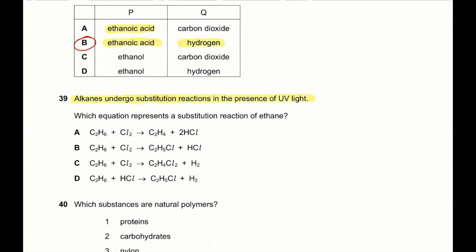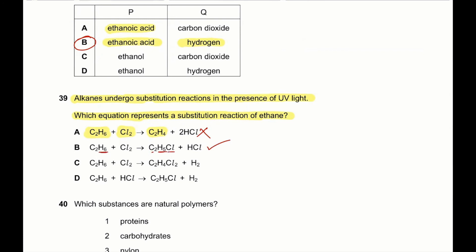Question 39: alkanes undergo substitution reactions in the presence of UV light. Which equation represents the substitution reaction of ethane? Ethane reacting with chlorine produces ethane — wrong. Ethane reacting with chlorine to produce chloroethane — correct, because one hydrogen is substituted: six hydrogens become five, one replaced by chlorine, and HCl is a product. Double substitution (dichloroethane) is not a single-step process. Ethane reacting with HCl won't work. So B is the correct answer.